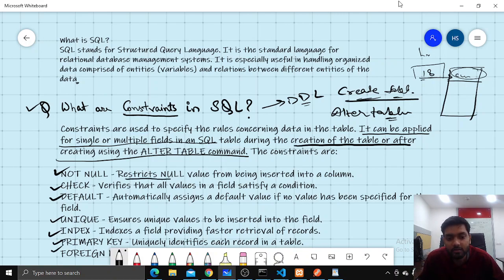NOT NULL restricts the user to enter null values in that particular column. CHECK constraint, you can put a condition that has to be satisfied in that field. DEFAULT, automatically if you have not given any value, that default value will be inserted in that field.